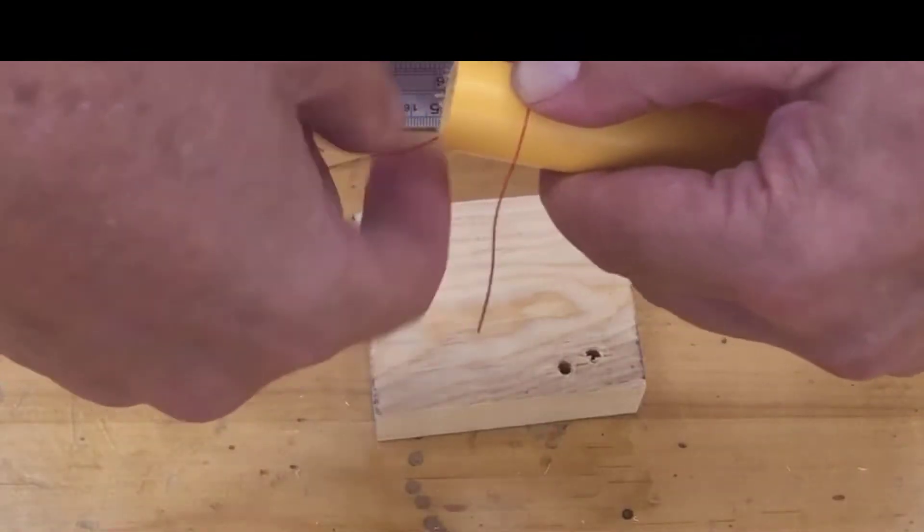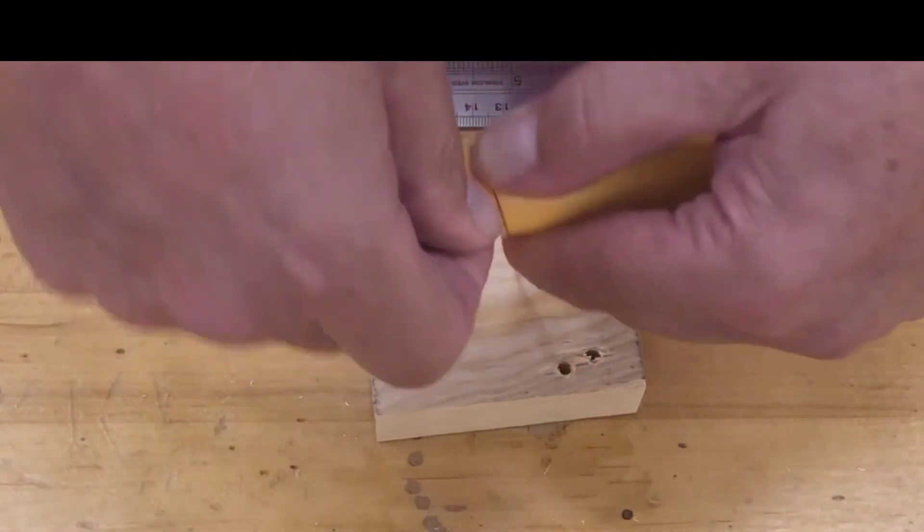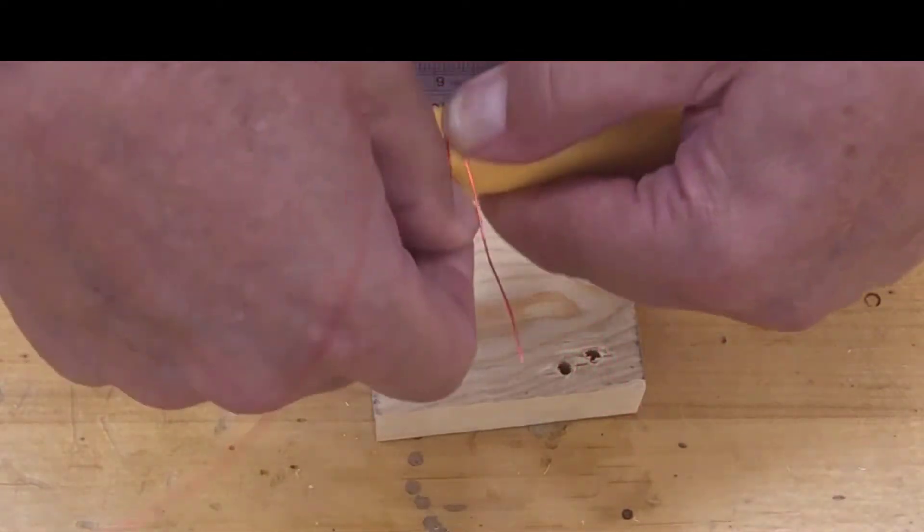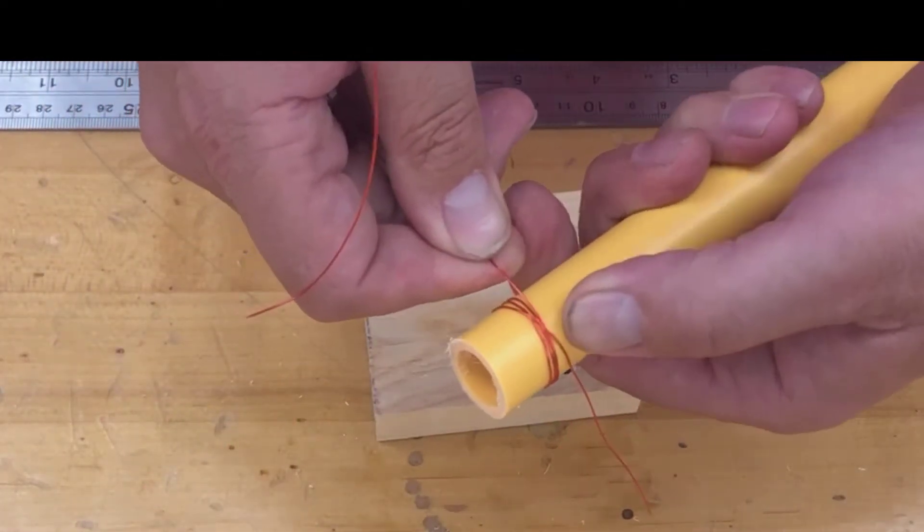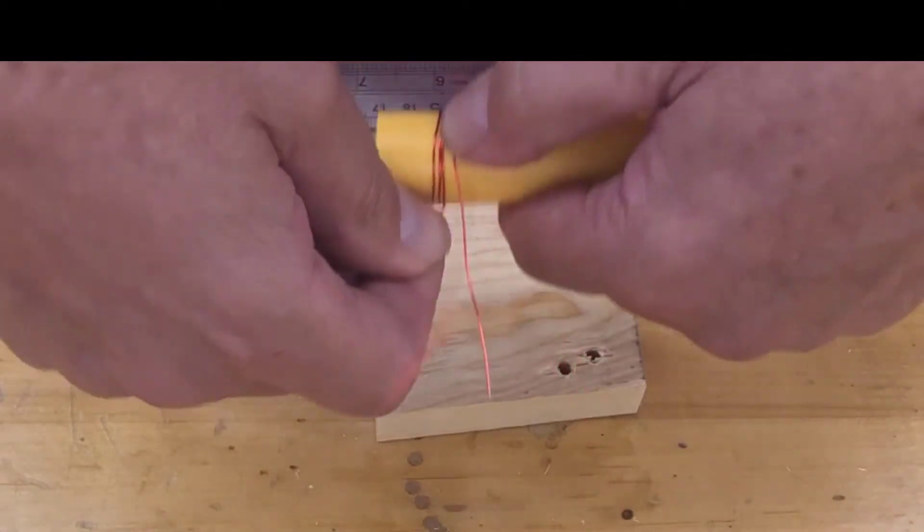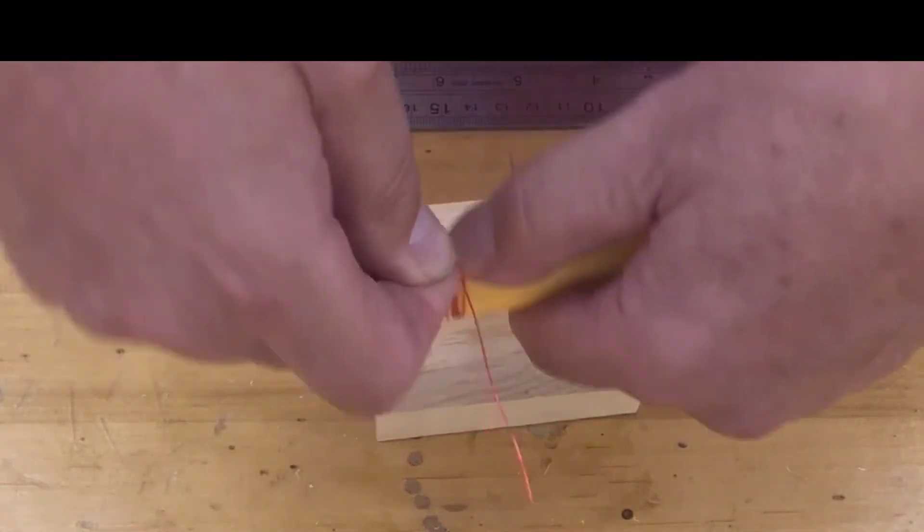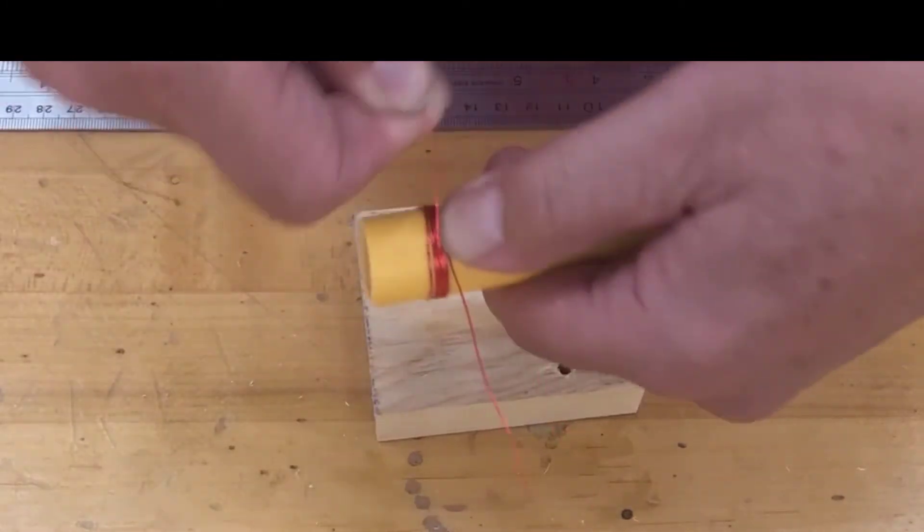Now I'm gonna wrap the rest of this coil around the end. I'm holding with pressure and I'm also over-wrapping it. See the cross right there to kind of lock in the starting piece.